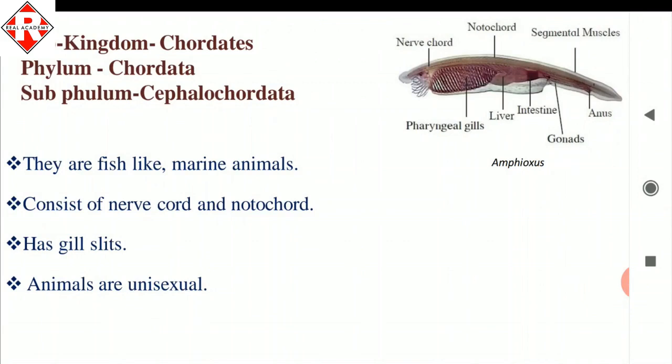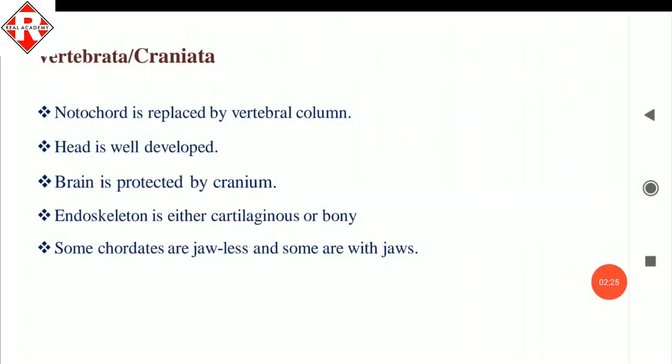Sub-phylum Cephalochordata — all animals here are fish-like in appearance and are marine. Both the nerve cord and notochord are present and both are located dorsally. The notochord extends from head to tail. They have gill slits for respiration. All animals in this sub-phylum are unisexual.